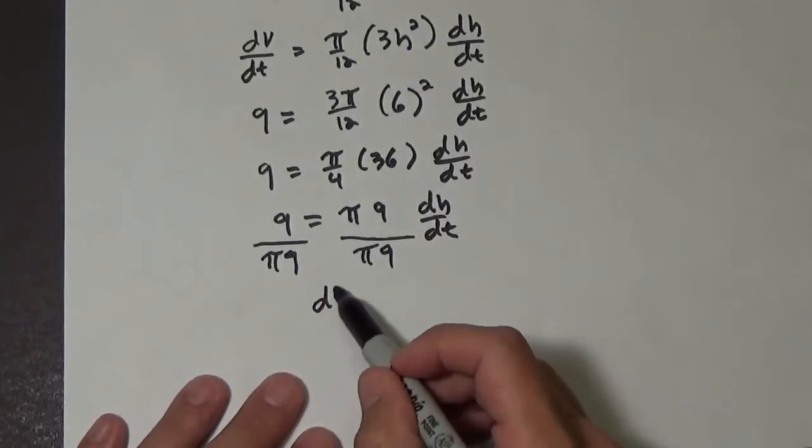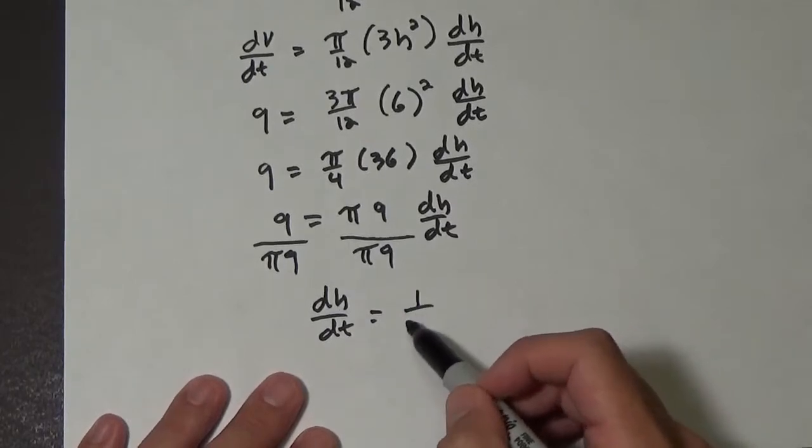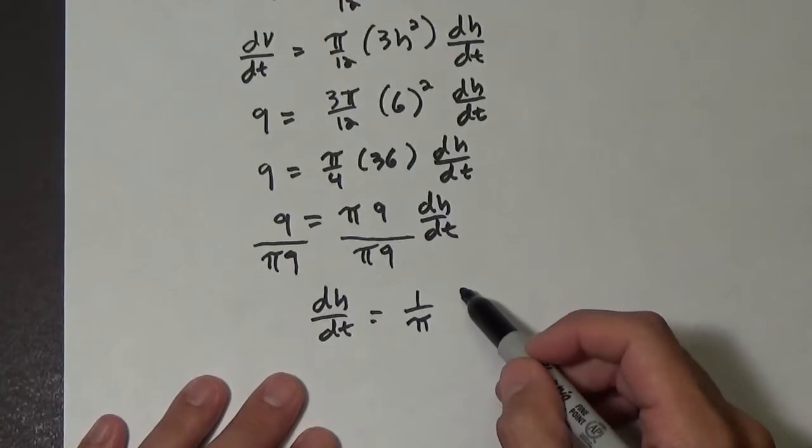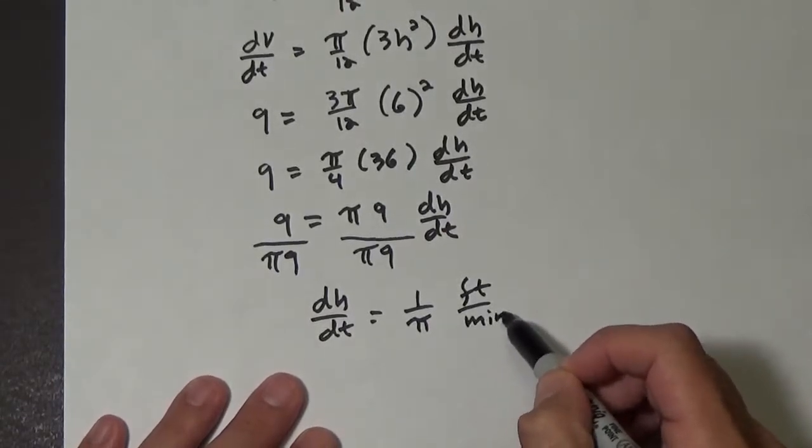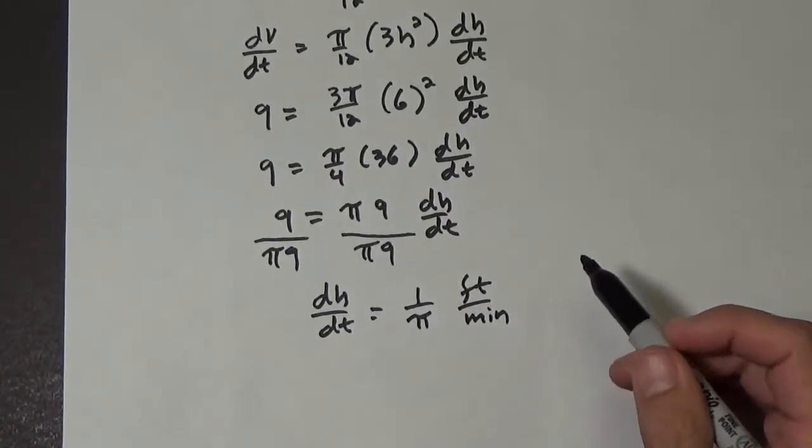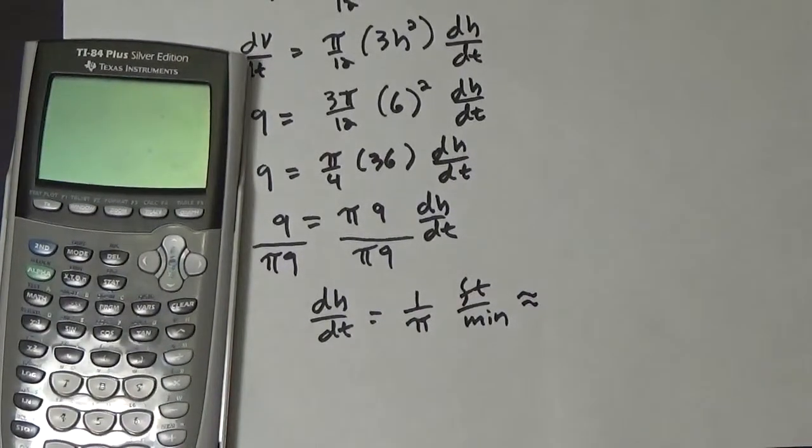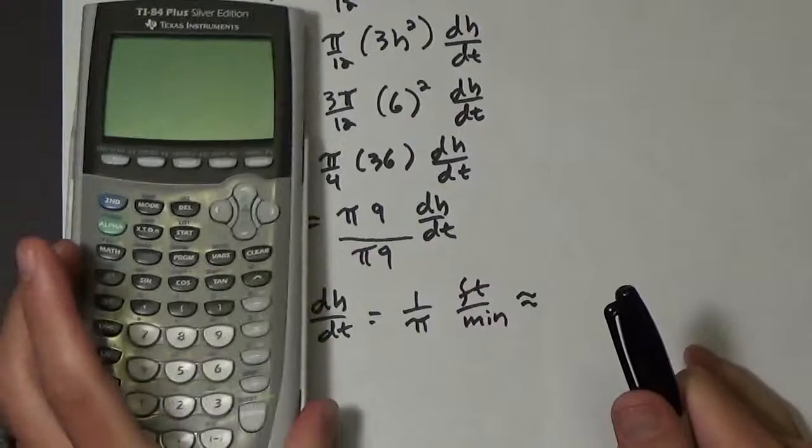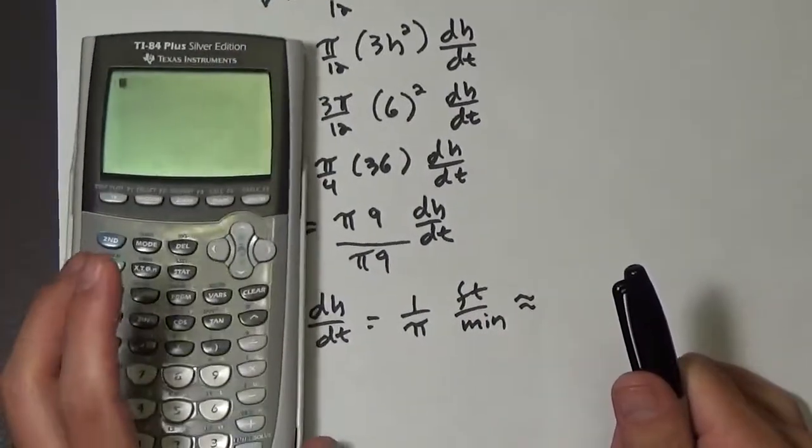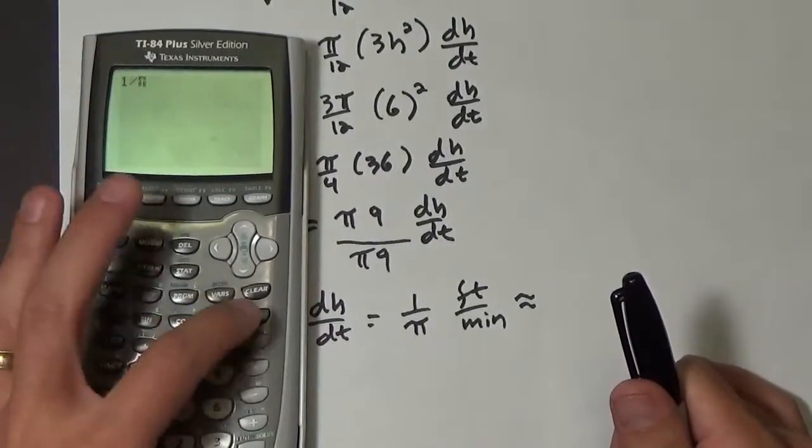So we're gonna end up with dh dt is 1 over pi, and that's the rate that the height is increasing, so that is in feet per minute. Now let's get a decimal equivalent, and of course if you have a test without a calculator, like either a test in class or the AP exam, then of course that's just the answer you leave it as. But since we have a calculator right next to us, let's go ahead and take 1 divided by pi.